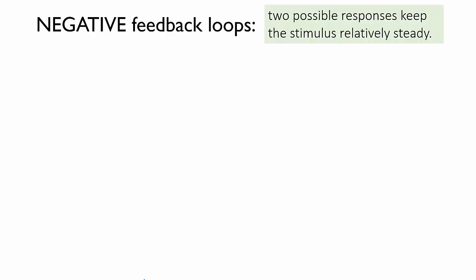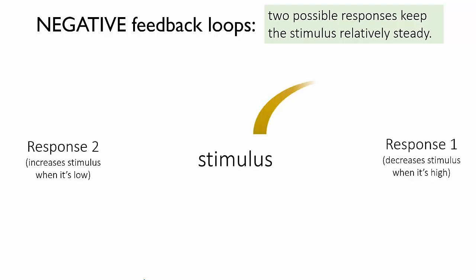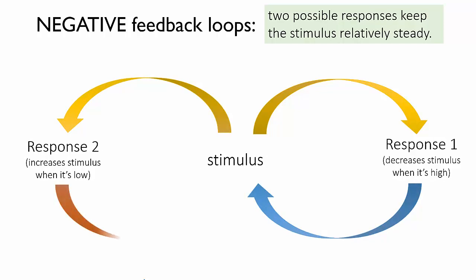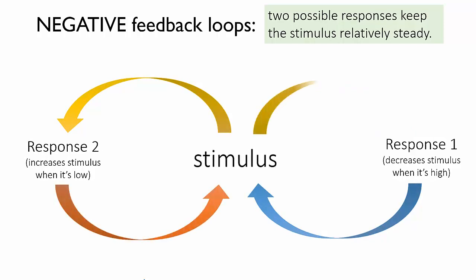A negative feedback loop does the opposite. It keeps the stimulus steady and prevents it from getting too big or too small. To do this, there need to be two kinds of responses in the system. When the stimulus gets too big, one response will act to reduce it. And when it gets too small, the other response will act to increase it. In this way, the two responses keep pushing the stimulus back to a middle point.